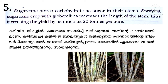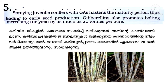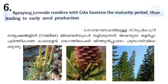Sugarcane plants store sugar in their stems. Spraying gibberellins on sugarcane increases stem length and thereby increases sugarcane production yield by 20 tons per acre. 6. Spraying juvenile conifers with GAs hastens the maturity period, thus leading to early seed production. Gibberellins sprayed on juvenile conifers accelerate their growth to maturity and promote early seed production.